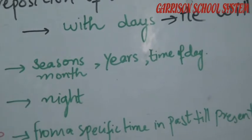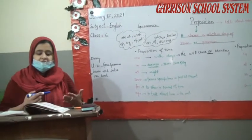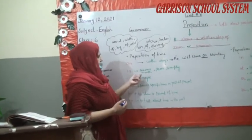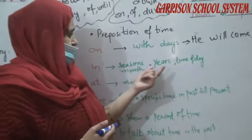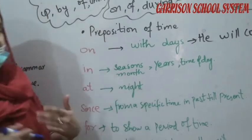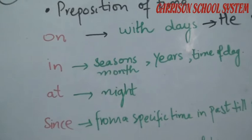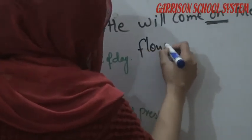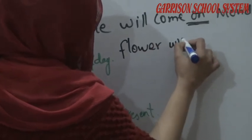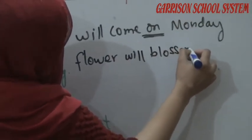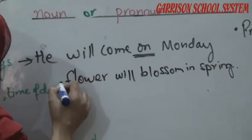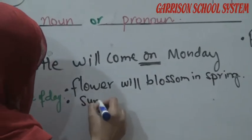'I will celebrate my birthday in June.' So 'in' can be used for seasons, years, time of day, and months. I have given you quite a few examples and repeated them. For example: 'Flowers will blossom in spring' — this is for a season. And 'Sunrise in the morning' — this is for time of the day.